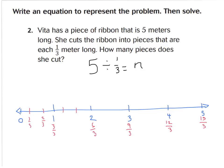If you're not sure, you can always just place your marks in between to show four thirds, five thirds, six thirds, seven thirds, eight thirds, nine thirds, and so on until you get to fifteen thirds. How many pieces does she cut? My model shows she cuts 15 pieces that are all one third each. Therefore, N equals 15.